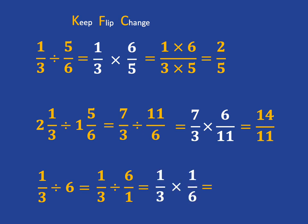You keep the first fraction the same, you flip the second fraction, and you change division to multiplication, and then you multiply as normal.